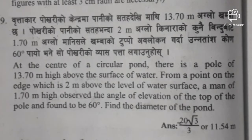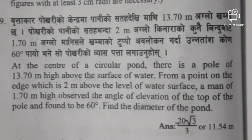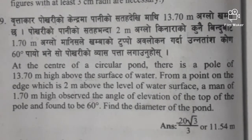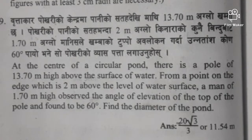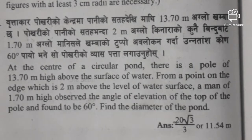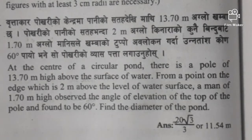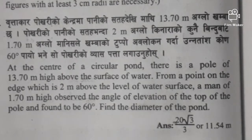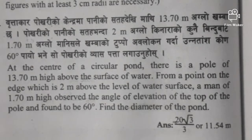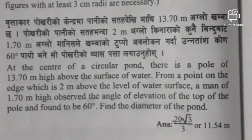If you have the question on the screen, you will be able to see the question on the screen. The first question: at the center of a circular pond, there is a pole of 13.70 meters high above the surface of the water. From a point on the edge which is 2 meters above the level of the water surface, a man of 1.70 meters high observed the angle of elevation of the top of the pole and found it to be 60 degrees. Find the diameter of the pond.